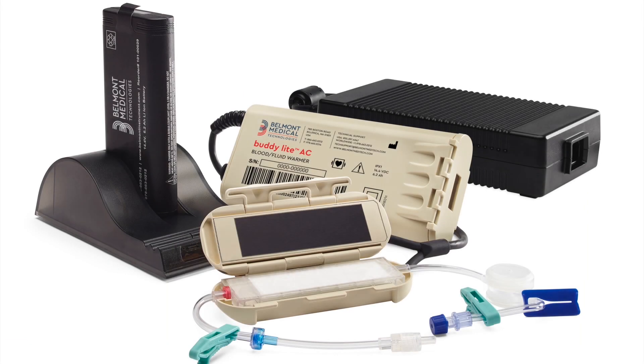The Belmont Buddy Light system consists of the heater unit with battery compartment, a battery pack, and battery charger. The Belmont Buddy Light AC additionally includes an AC power pack for continuous use.